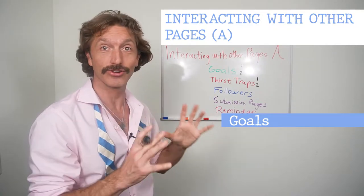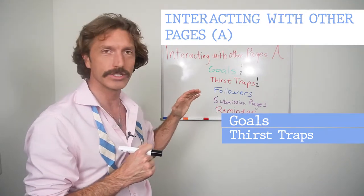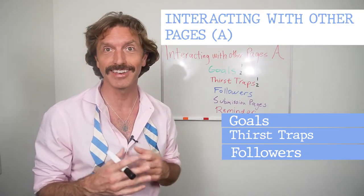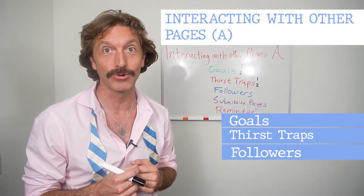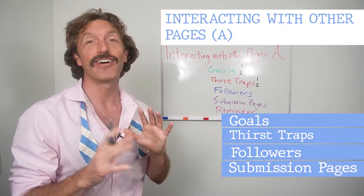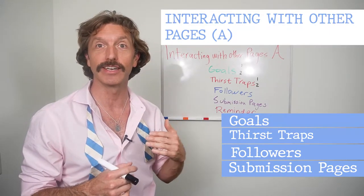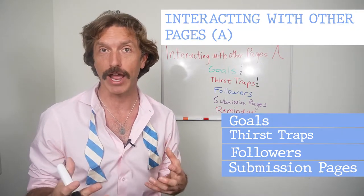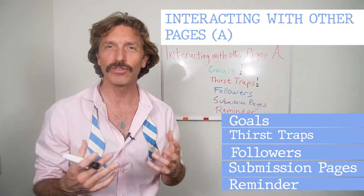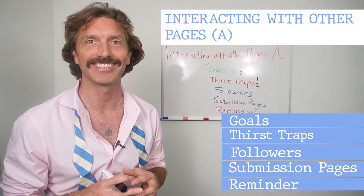Next thing, I've divided this episode into the types of pages that you should be interacting with. Number one is going to be other sexy thirst trap pages. And I've got two specific things on what to do and how to interact with those. Then how to interact with your followers and those folks that really keep your page going. Next thing, I know I just devoted a whole episode to submission pages, but I saved this one thing for this episode that it's important for you to go back to those pages and interact with them. And then finally, I've got a nice little reminder, just something I want all of us to keep in mind as we're having fun on Instagram and interacting with other pages.